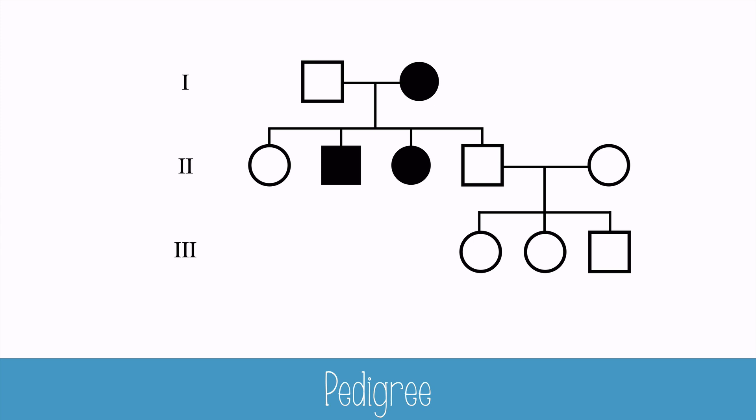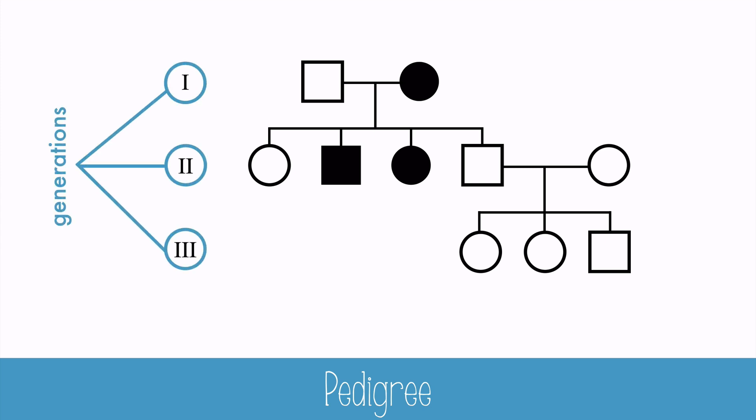Off to the side there are Roman numerals, and these stand for the generations one, two, and three, which are basically the grandparents, parents, and grandchildren.